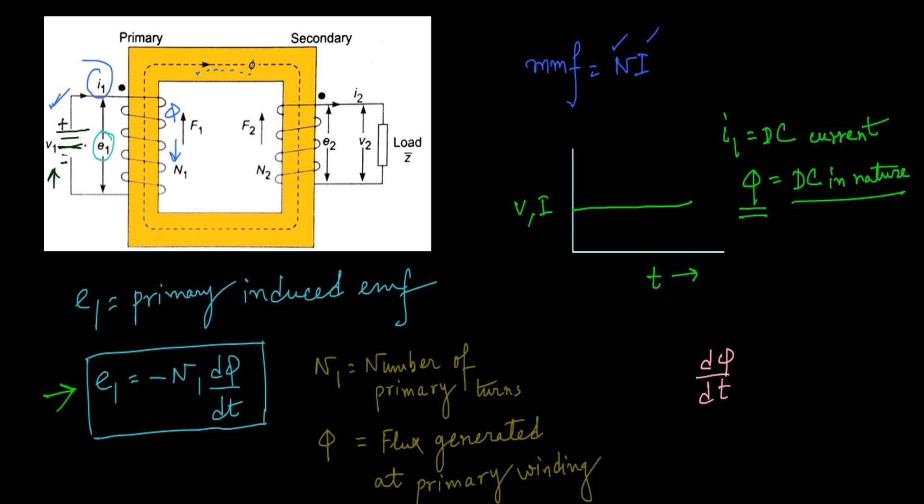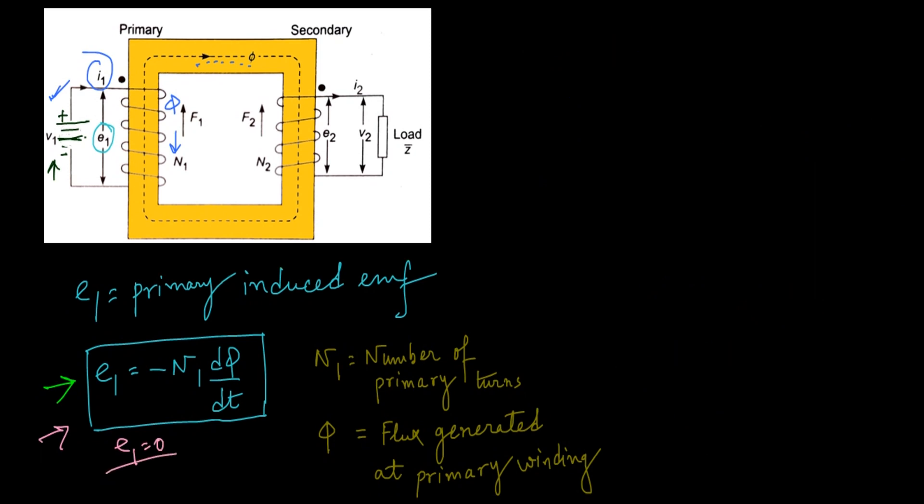Whenever a flux is generated which is DC and we take this flux to this particular equation, then derivative dφ/dt is equal to 0, because the derivative of a constant is always equal to 0. So the value of induced EMF is equal to 0, because if we put dφ/dt equal to 0 in this equation, that gives E1 equal to 0.